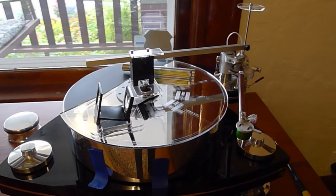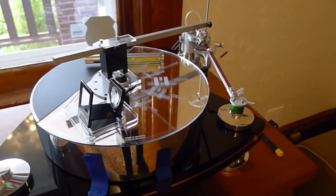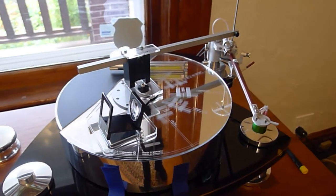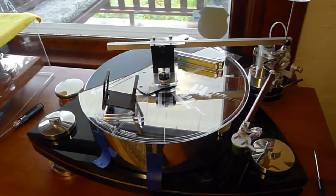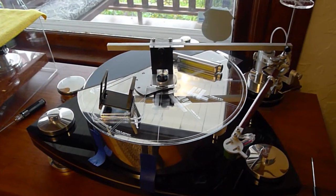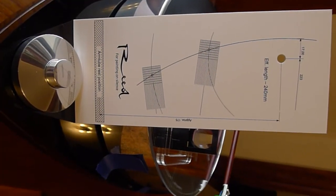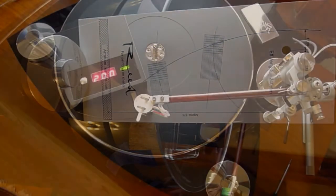And now we're setting up the arm so we can listen to it. This is a Smart Tractor, so we're checking pivot to spindle point as well as overhang. Reed also supplies a protractor card.